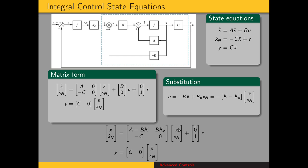Our state vector is the original x bar plus the additional x sub n. Our input matrix is this zero vector and a one. Our output matrix is the original C plus an additional zero. The reason we have zero here is because the output still has the same relationship to the original state variables x.